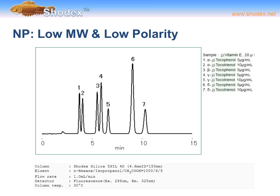An example of a low molecular weight, low polarity separation in normal phase mode is vitamin E — a 30 µL sample separating alpha, beta, gamma, and delta tocopherol at different concentrations. A 5-Sil 4D silica-based column was used. The eluent is n-hexane, isopropanol, and acetic acid at a ratio of 1000:6:5 to ensure complete elution of all sample analytes. The flow rate was 1 mL/min, a fluorescence detector was used, and the column temperature was about 30°C.